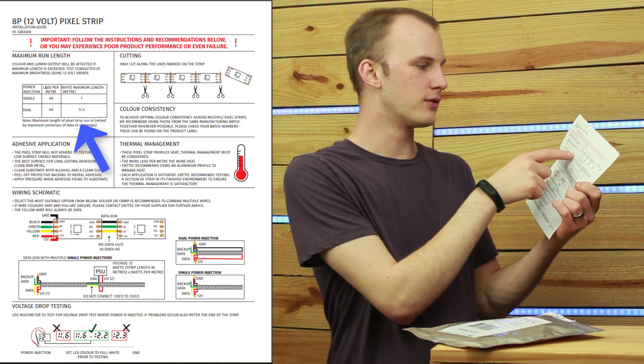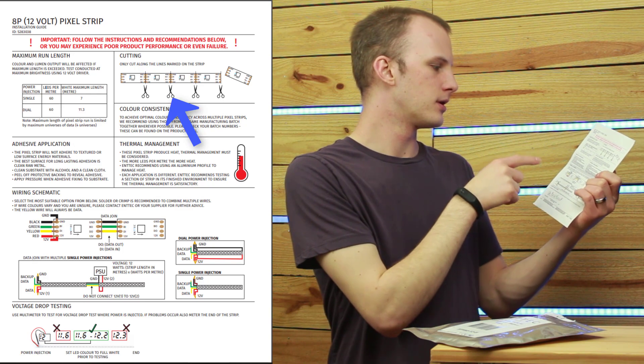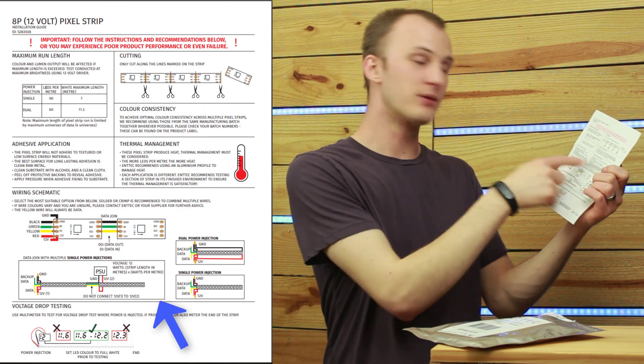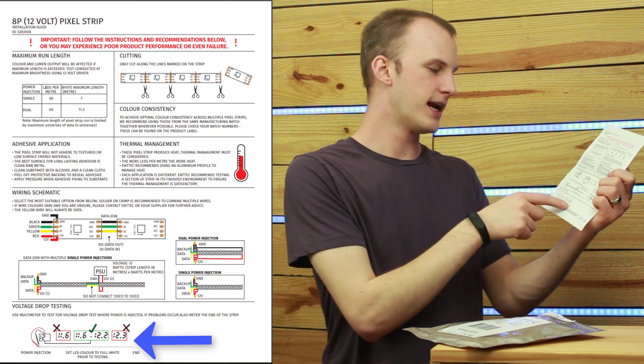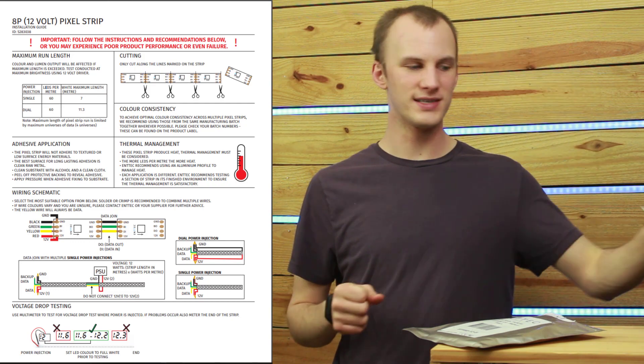is how far you can run if the power source is at 12 volts right at the end of the tape, what the maximum length of the tape is going to be. They tell you with single or with dual power injection. They show you where you can cut the tape. They show you how to wire. They show you if you're doing some different power scenarios, how that works, and how to test if you're having any issues with your tape. Hugely helpful. Don't throw this out.